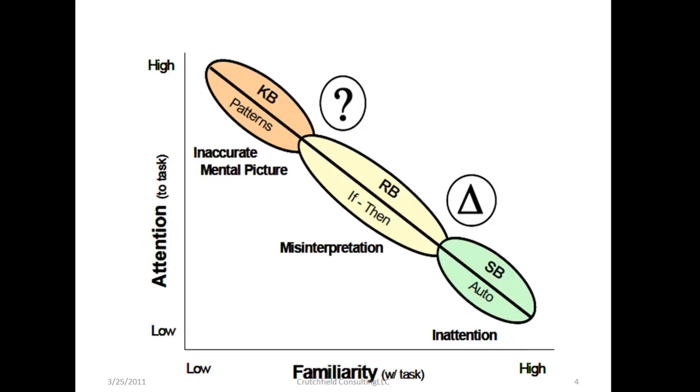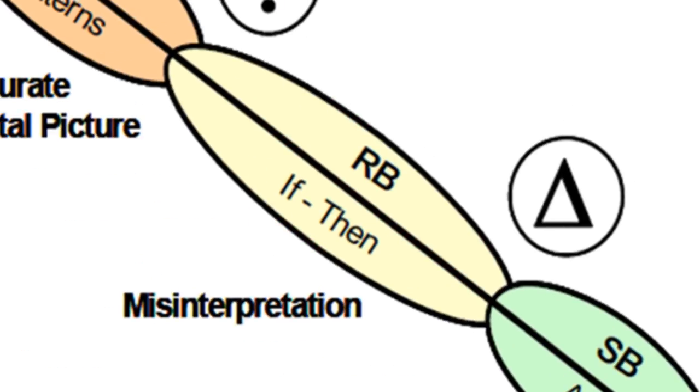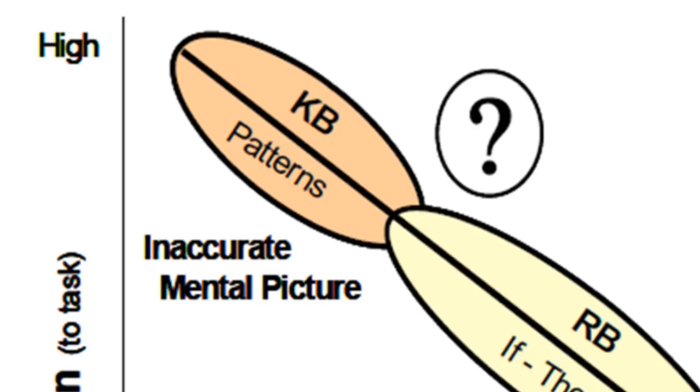This chart from the handbook compares attention versus job task familiarity. As familiarity decreases, attention requirements increase. Note that the performance types overlap slightly. Skill-based errors are primarily due to inattention. One drifts away from maintaining focus on the job at hand. Rule-based errors are primarily due to misinterpretation of the rules to be applied. Knowledge-based errors are due to inaccurate mental pictures. A misunderstanding of the issues, a bias, or preconceived errors over the situation may be blocking or distorting information.